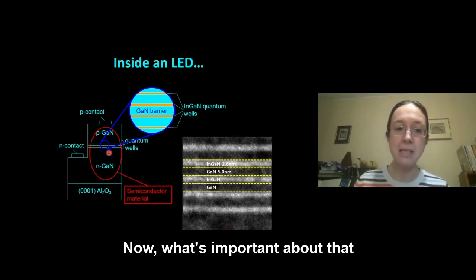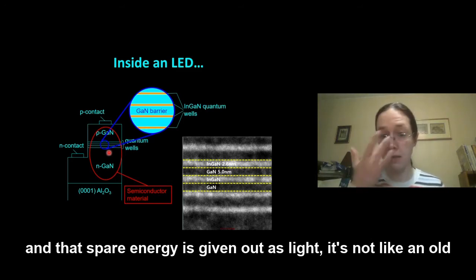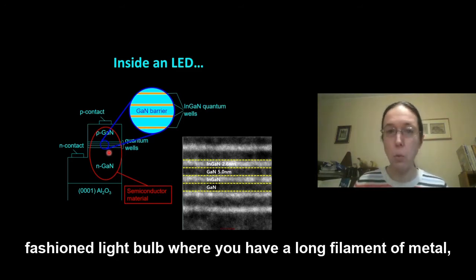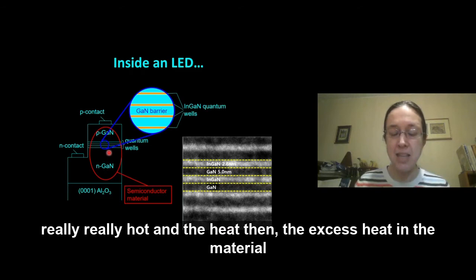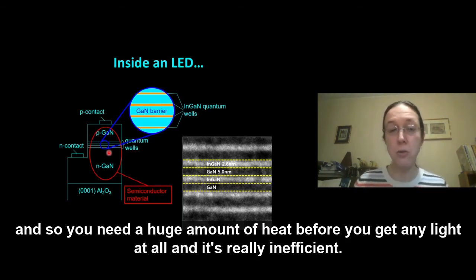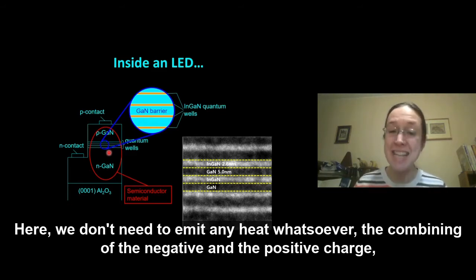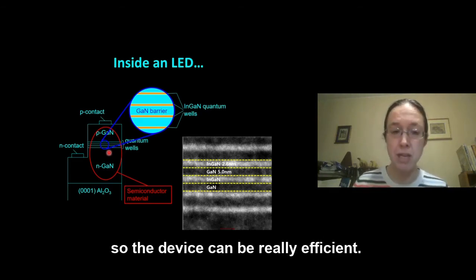Now, what's important about that is that the combination of electrons and holes is naturally a light emitting mechanism. When the electron meets a hole, it loses energy and that spare energy is given out as light. It's not like an old-fashioned light bulb where you have a long filament of metal. And in order for that filament of metal to give out light, it has to get really, really hot. And the heat, the excess heat in the material is effectively emitted as light. It's just an accidental by-product of heat production. And so you need a huge amount of heat before you get any light at all. And it's really inefficient. Here, we don't need to emit any heat whatsoever. The combining of the negative and the positive charge, the electron and the hole, naturally gives out light without heat having to be emitted. So the device can be really efficient.